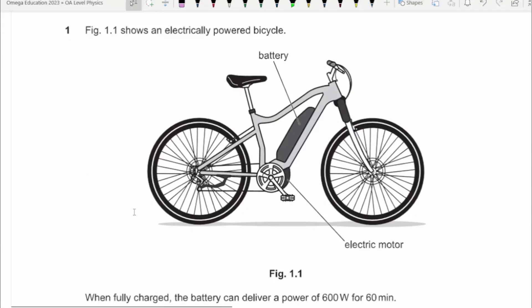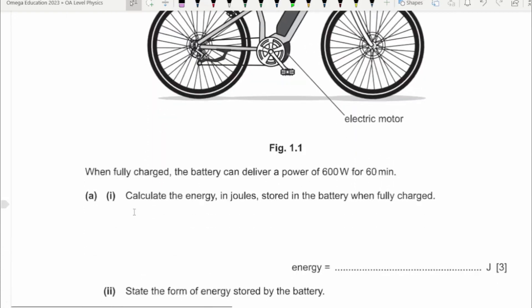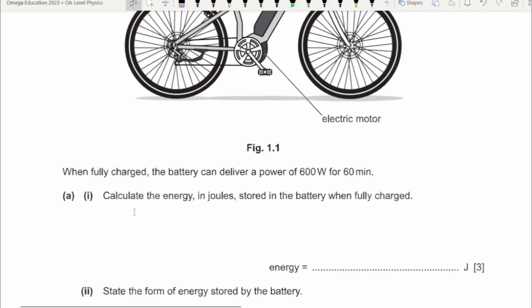Figure 1.1 shows an electrically powered bicycle. When fully charged, the battery can deliver a power of 600 watts, so I can write P here — this is the value of power, capital P. The time is given as 60 minutes. Minutes is not the standard unit of time; seconds is, so I'm going to convert time into seconds: 60 times 60 equals 3600 seconds.